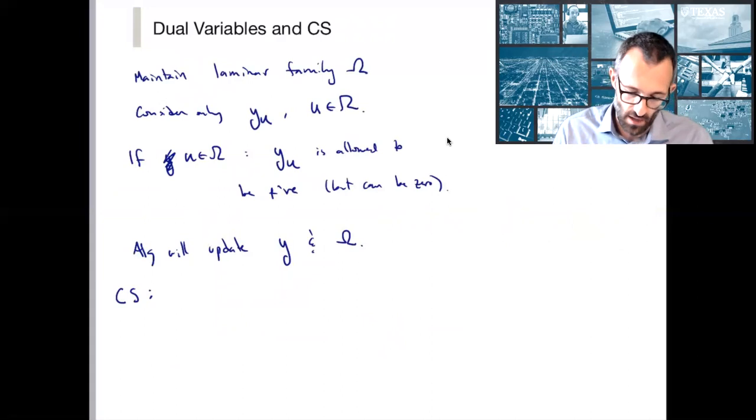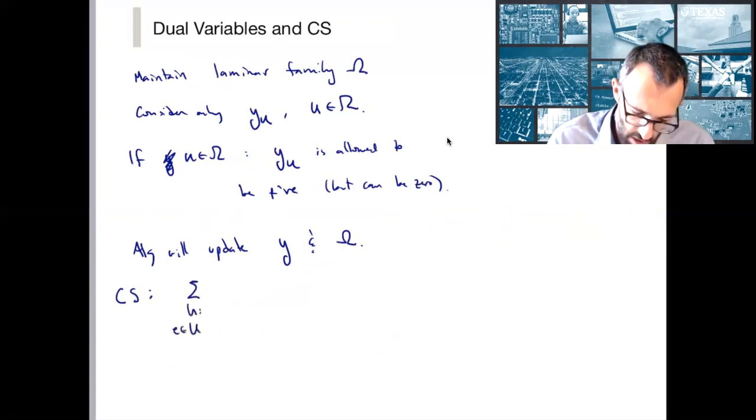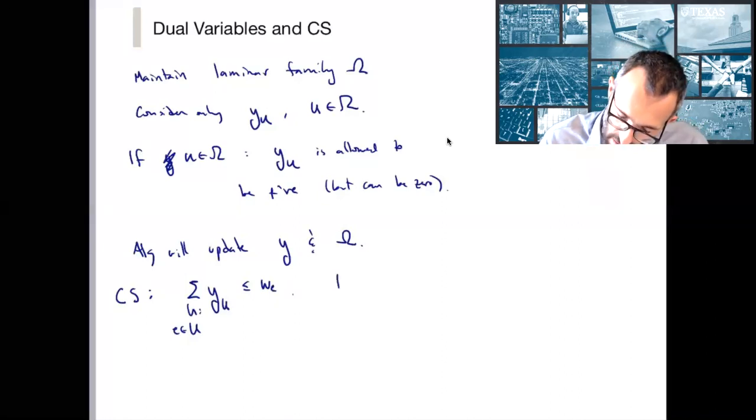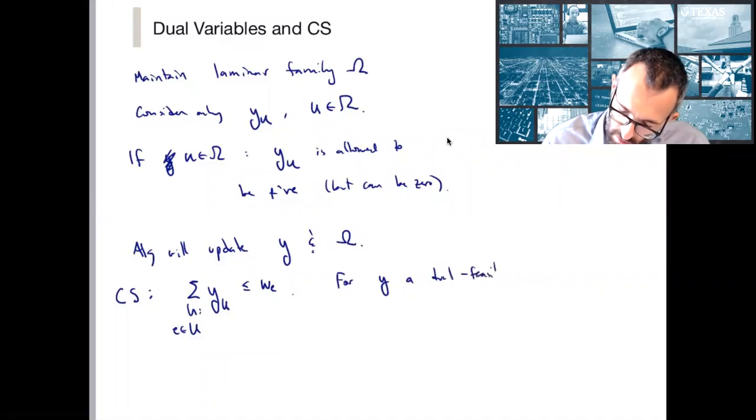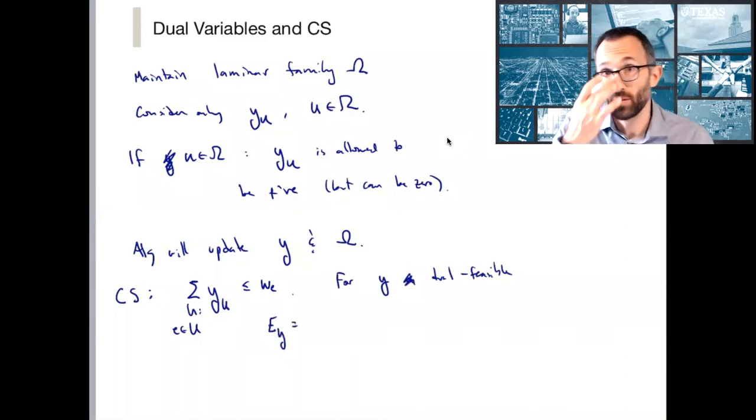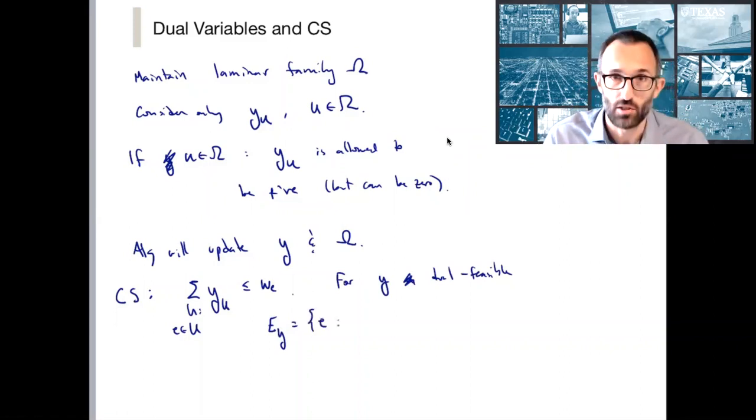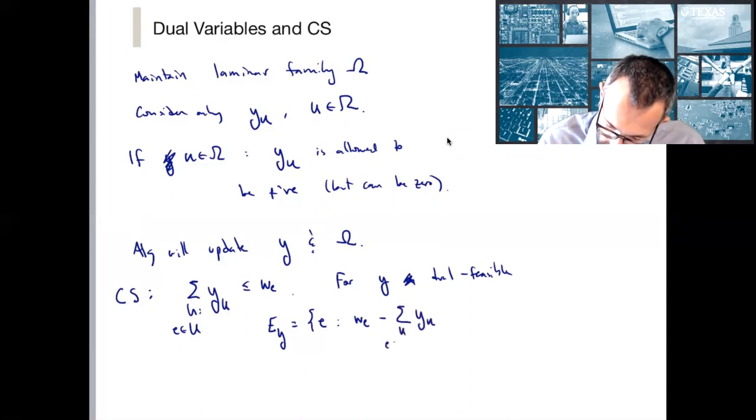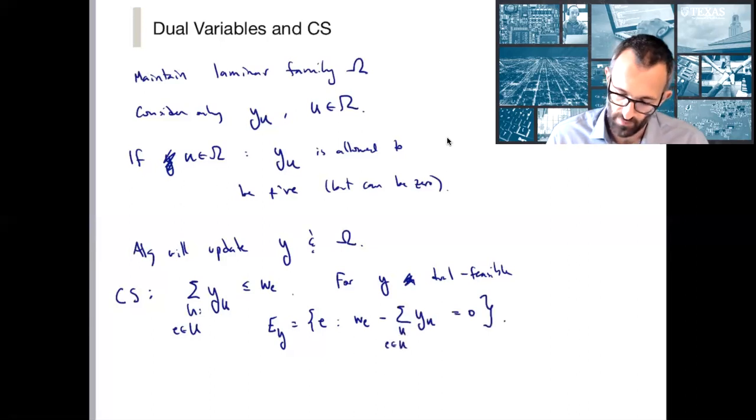In other words, we have our constraints: sum over U for every e in U, y_u is less than or equal to w_e. So I'm going to define, for y a dual feasible solution, the set E_y to be all of the edges that the restricted primal is going to be allowed to use. So it's just going to be e such that the constraint I wrote here is satisfied with equality. In other words, w_e minus the sum of y_u over all U with e in U, this is equal to zero. So the restricted primal can only use these edges.